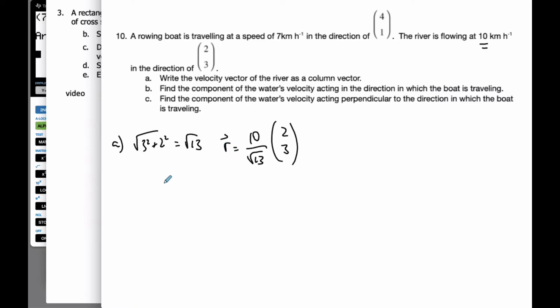And so now part B is saying, find the component of the water's velocity acting in the direction the boat is traveling. Well, let's say here is my river. Oh, let me do it in black since I am using black for river.